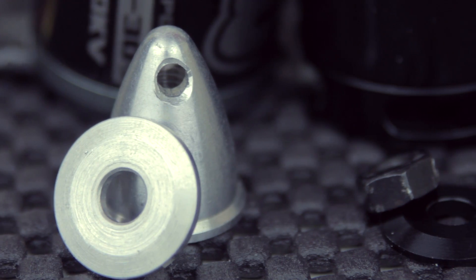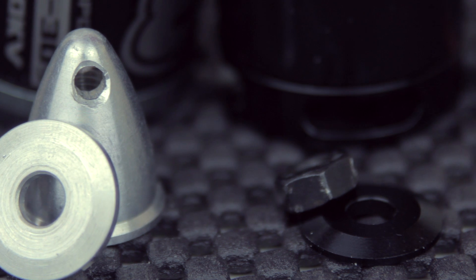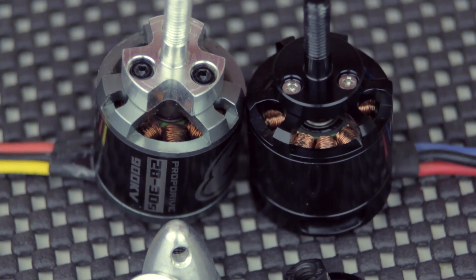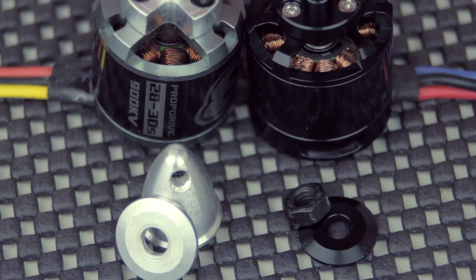The first thing I want to mention is both of these motors are relatively the same size. One of the only differences between the two of them is that the SunnySky's actually come with the prop adapters, whereas the NTM's don't.